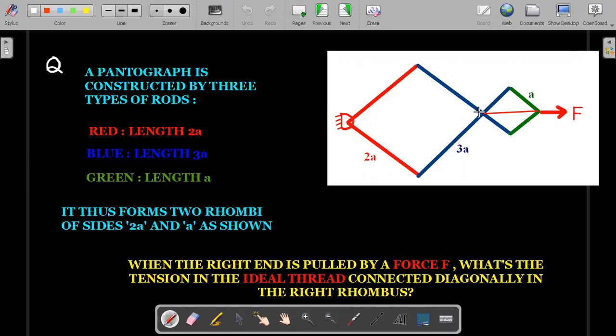And there are two such rods. This is also hinged. That's what a pantograph's characteristic is - the rods are hinged so that they can rotate about those particular hinge points. Then there is a green rod,